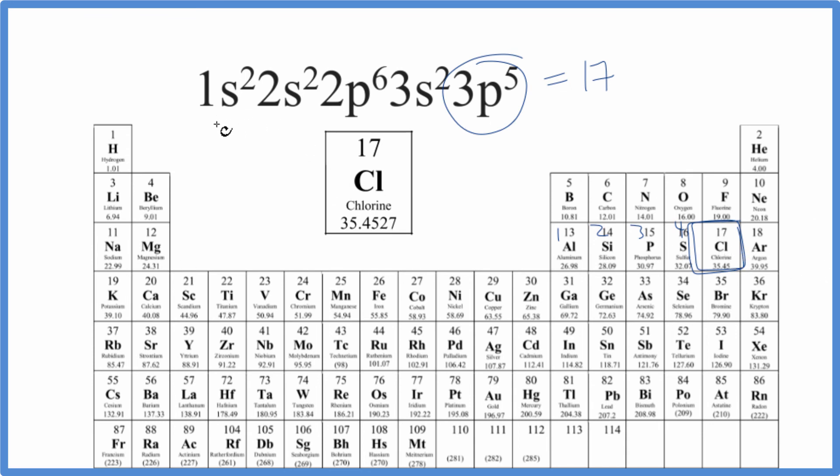So the electron configuration 1s²2s²2p⁶3s²3p⁵ represents chlorine.